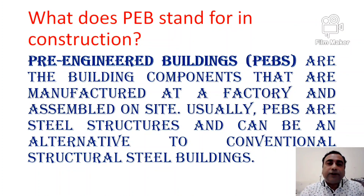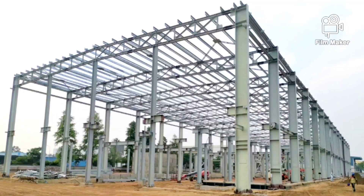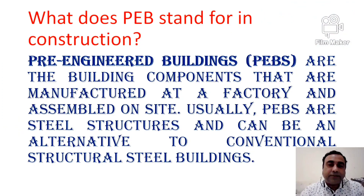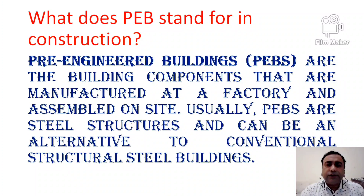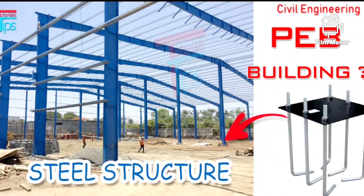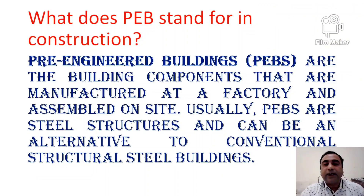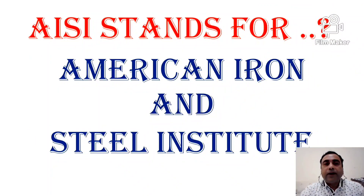In construction, PEB — pre-engineered buildings — refers to building components that are manufactured at a factory and assembled on site, meaning you receive a ready-made structure. PEBs are usually steel structures and can be an alternative to conventional structural steel buildings.